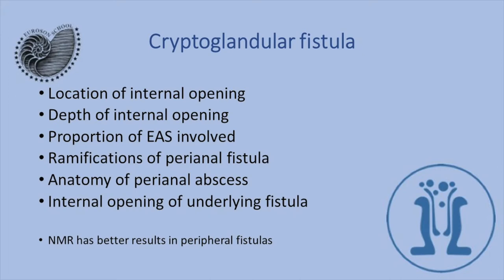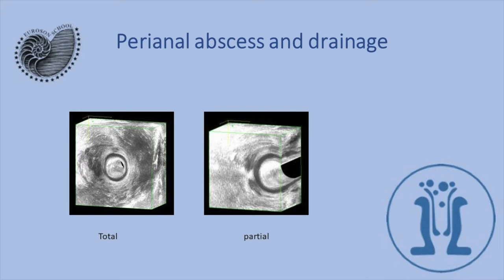Here we see yesterday's patient: this is an anal abscess which was drained in my clinic in an office setting. It was lavaged with hydrogen peroxide, and here we see that the abscess has resolved — here is the hydrogen peroxide inside the abscess cavity. We can see that it has been corrected.